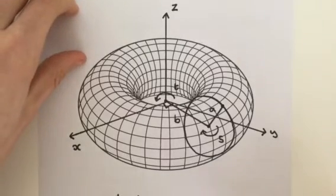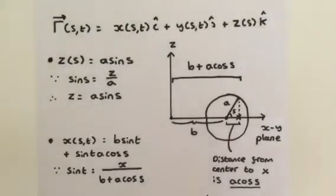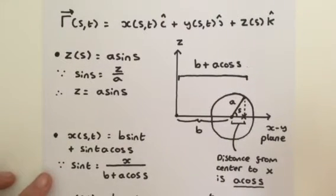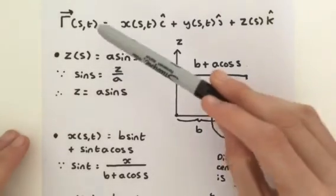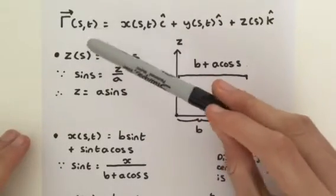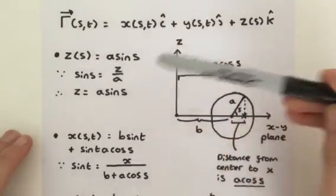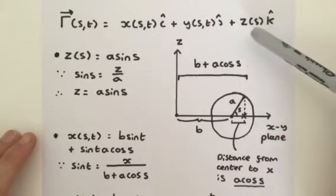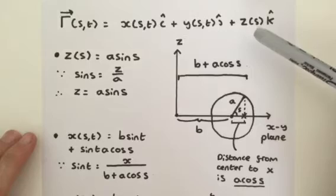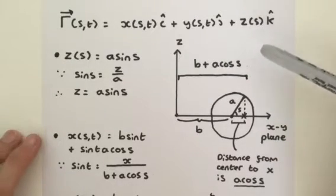So if you had a go, well done. If not we're going to go over the concepts right now. The general form for a vector valued function R of S and T, where R is of course a vector valued function of two variables S and T, is equal to three component functions X, Y and Z, where X and Y are functions of S and T and Z is a function of S.